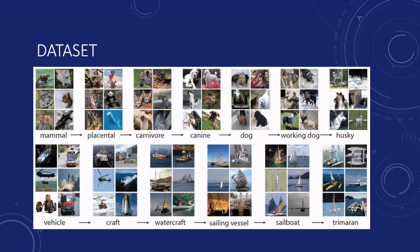We can see here that the hierarchy I was talking about earlier. So on the top we have Mammal, and then Placental, and then Carnivore, Canine, Dog, Working Dog, and then finally Husky. So same thing for vehicle down there until Chimera.